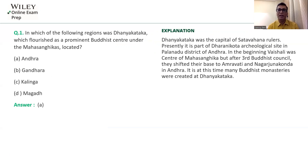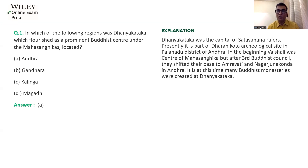The very first question asks: in which of the following regions was Dhanya Katak, which flourished as a prominent Buddhist center of the Mahasangikas, located? To address this question, the answer is that it was located in Andhra. Now, the original division in Buddhism started from the Second Buddhist Council, held in 383 BC, when Buddhism got divided into two sects: Theravada and Mahasangika.